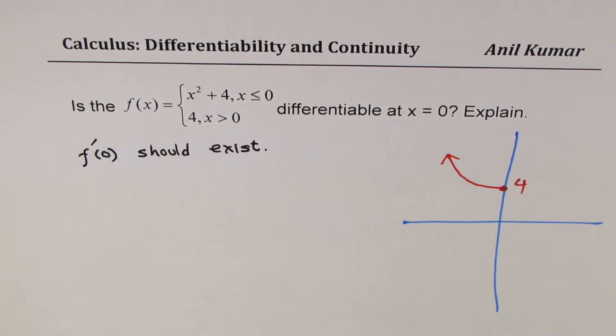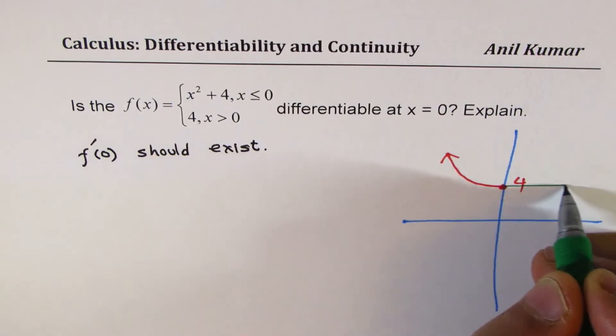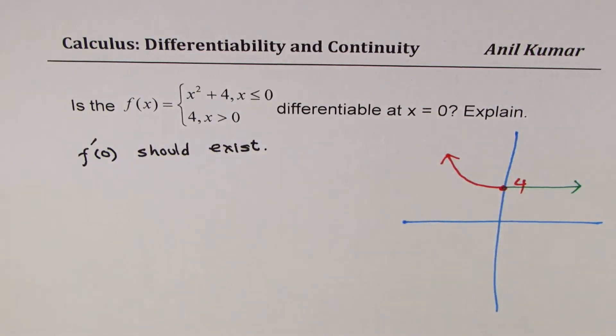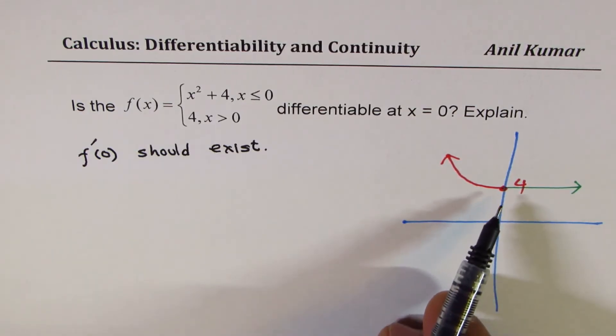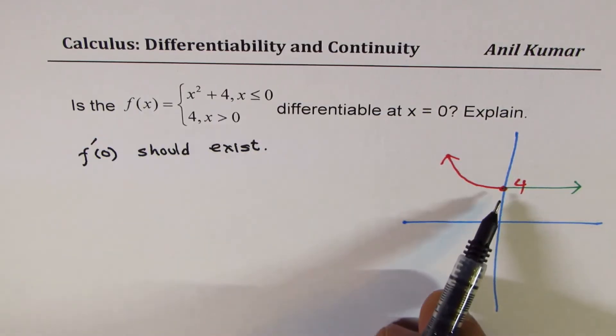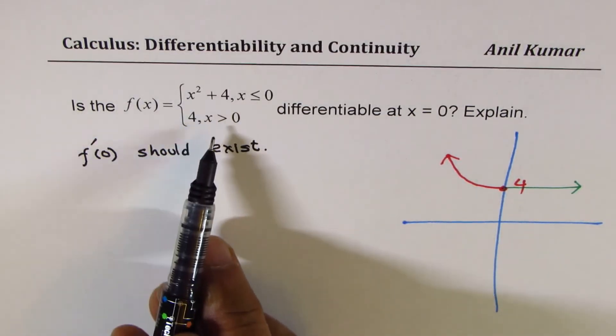On the right side of the y-axis, it is a constant function, 4, right? So it is a straight horizontal line. So it is continuous at x = 0. However, we have to find whether it is differentiable or not. So that means we'll treat it in two different parts.